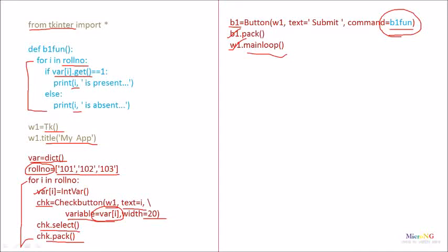The loop repeats, taking the second roll number and checking its status using the var variable associated to the CheckButton with the respective index. If the status is 1, the student is present; otherwise, the student is absent. Thank you for watching this video.